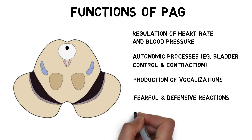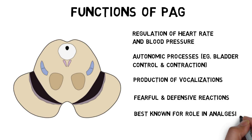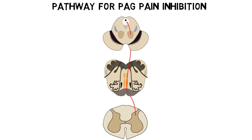The PAG is best known, however, for its role in analgesia, or pain reduction. Since the 1960s, the PAG has been known to play a role in analgesia, and stimulation of the PAG has been observed to inhibit pain in both rodents and humans.